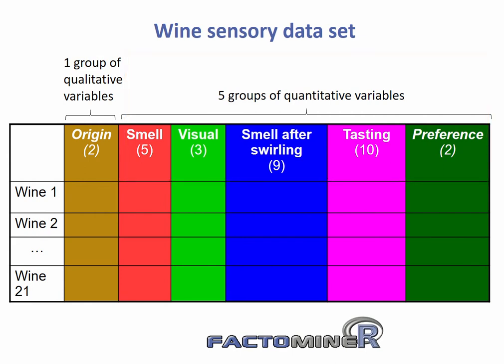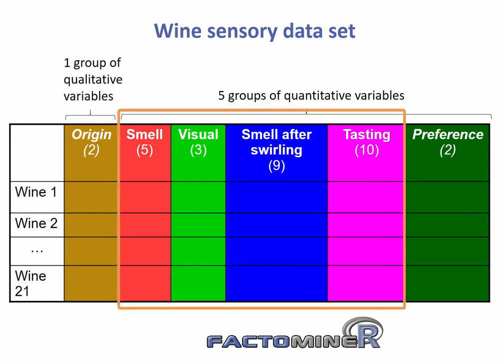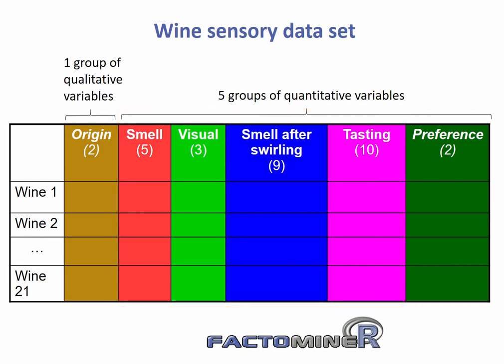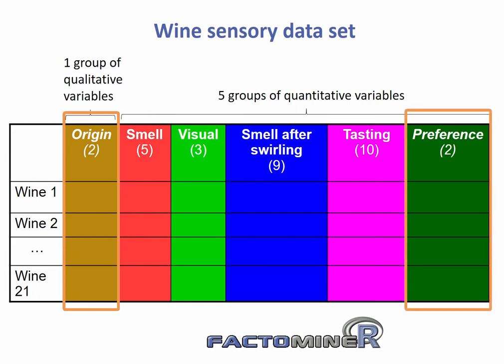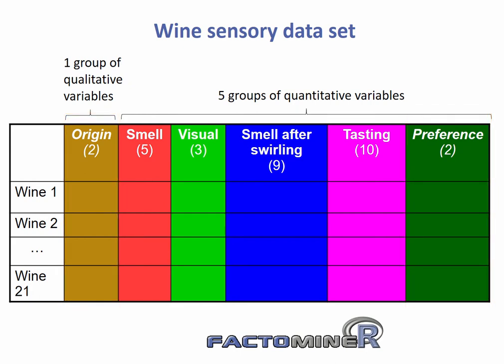One group of smells, one group of visual perceptions, one group on taste variables, one group on smell after swirling, and a group on tasting appreciation. The groups for smell, visuals, tasting, and smell after swirling are considered as active groups, while the groups for the wine's origin and for tasting appreciation are considered as supplementary groups.